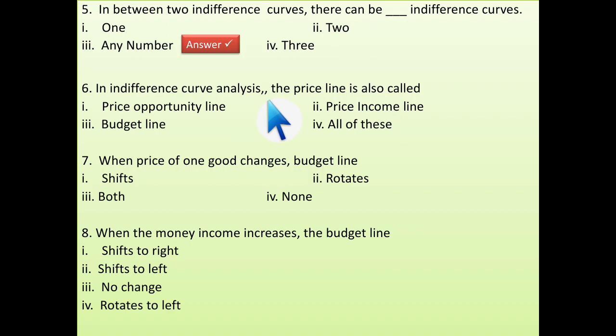In indifference curve analysis, the price line is also called price opportunity line. Correct. Budget line. It is also correct. Price income line. It is also correct. So, the answer is all of this.